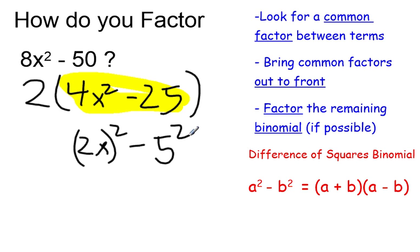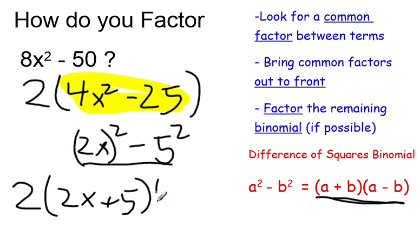Therefore, I can rewrite the whole thing. I still need the 2 out front, but this part can be rewritten according to this formula. So it becomes 2x plus 5 and 2x minus 5.